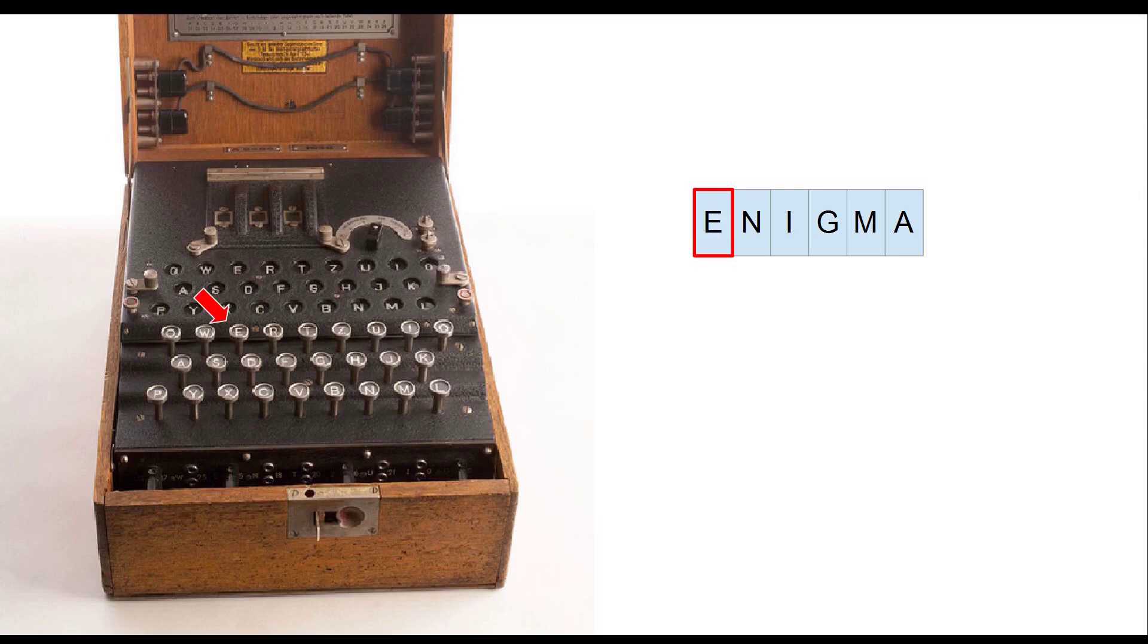Underneath every letter of the lamp board, a small light bulb was installed. When the operator pressed the key, an electric current would flow from the key via the rotors to one of the light bulbs. In our case, letter H would light up. This letter is the first letter of the encrypted message.